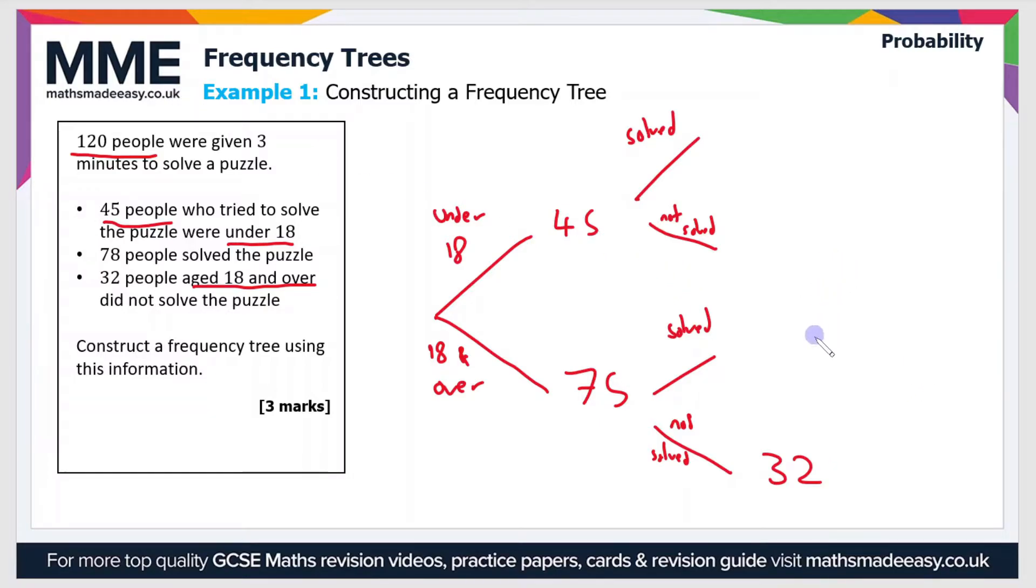Now from here there's another part that we can fill out, and that's because we know that there's 75 people that aged 18 and over, and of those 75 people, 32 did not solve the puzzle. So that means the remaining people in that 75 must have solved the puzzle, and so that is 43 people. That's just 75 minus 32.